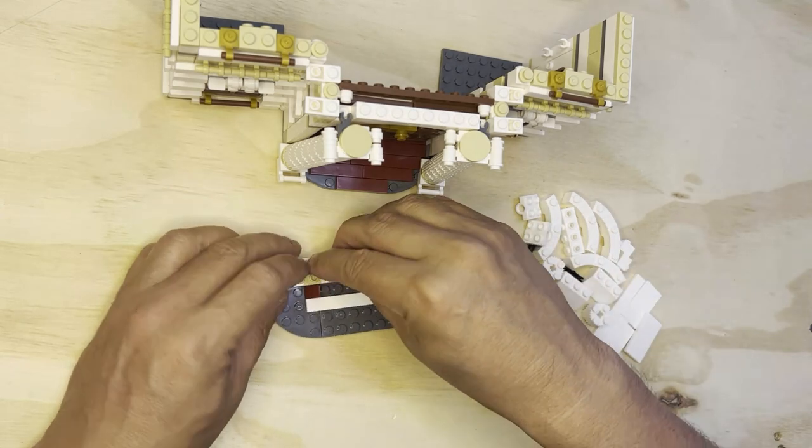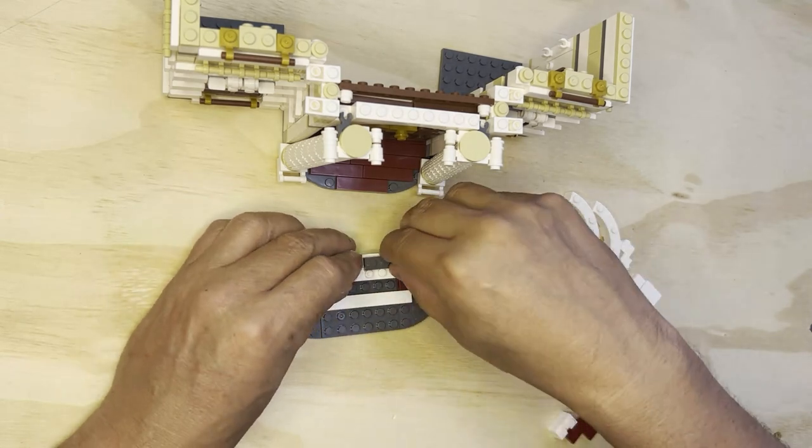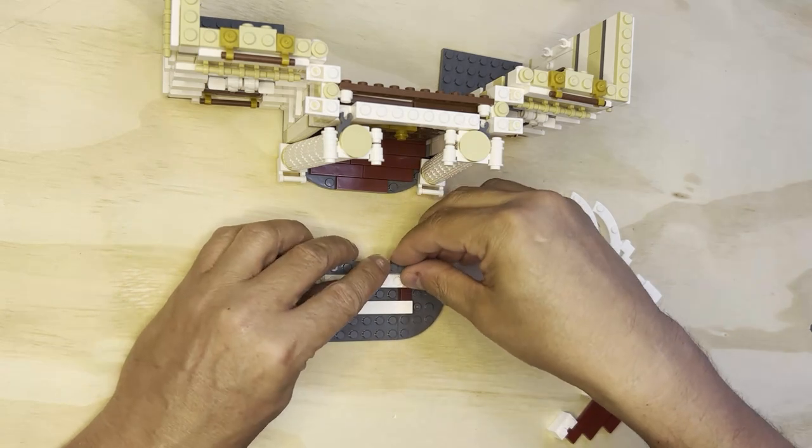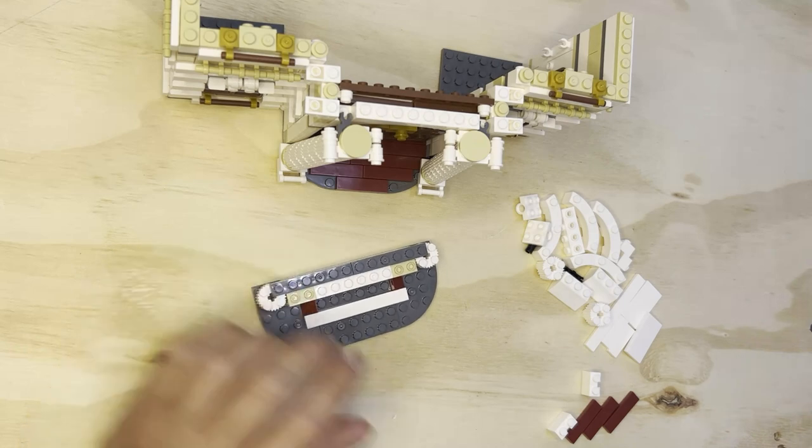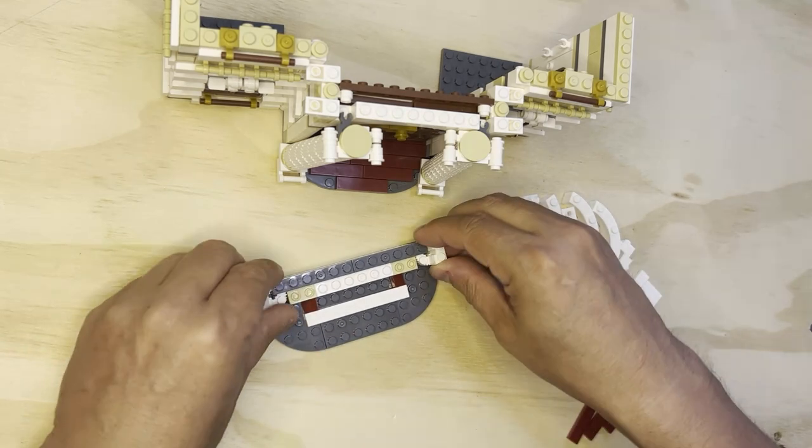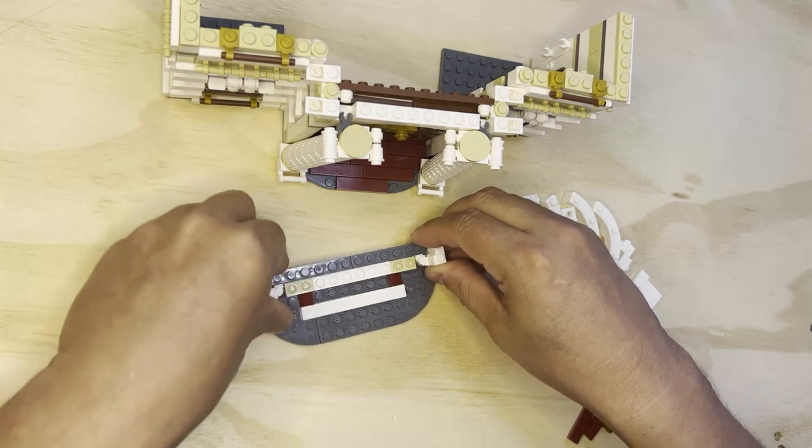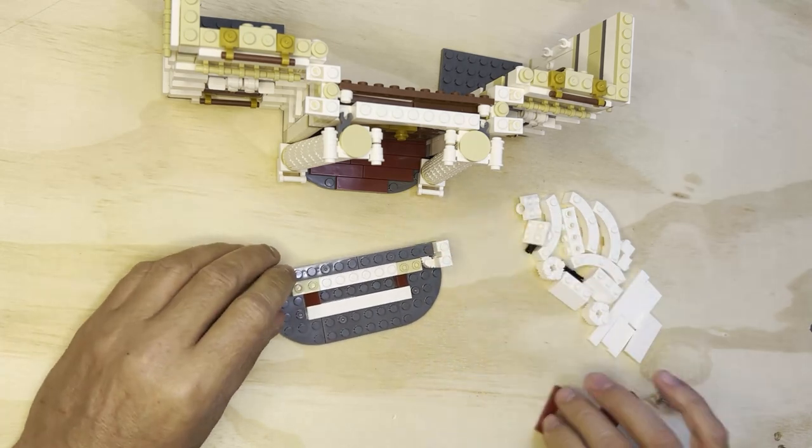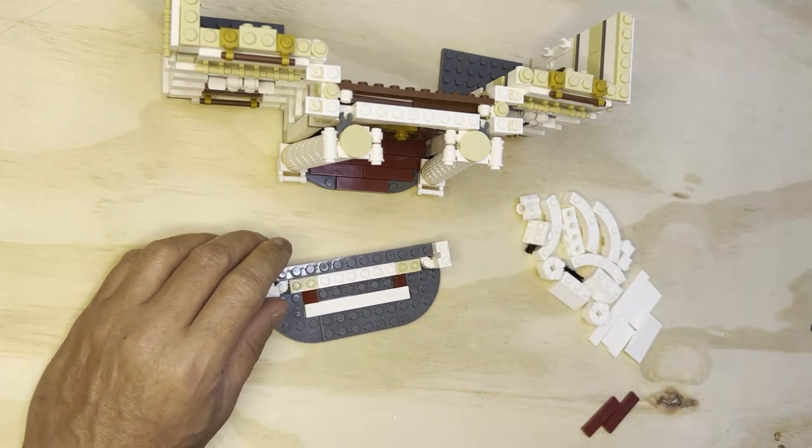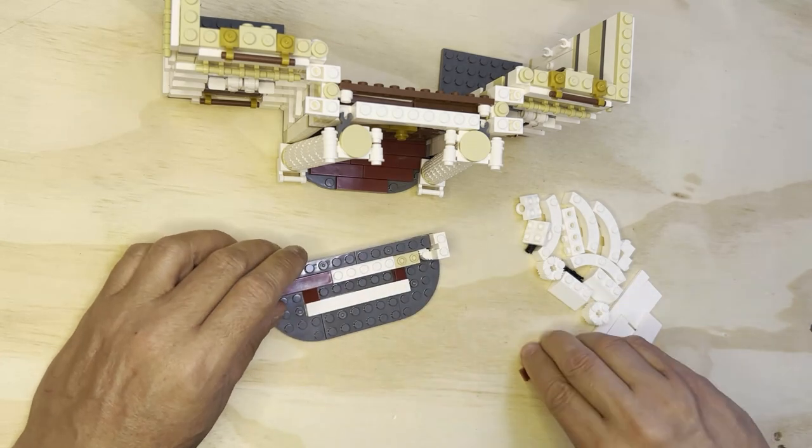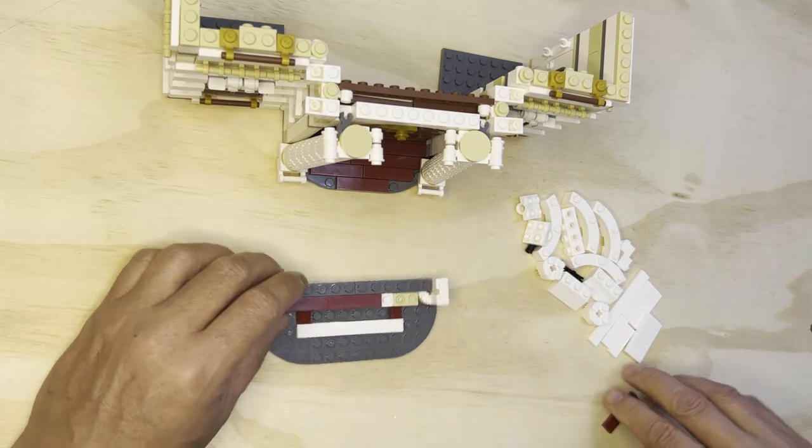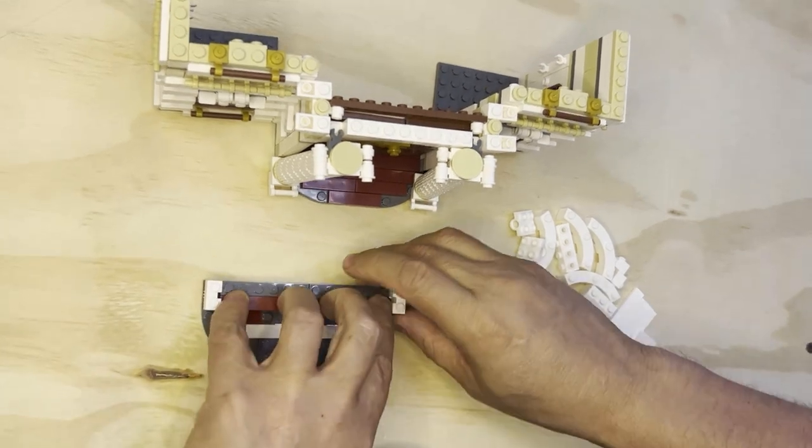Okay, so these go like this. Bingo. And then I get two pieces like that, and these are going to go here, just like that. Okay.